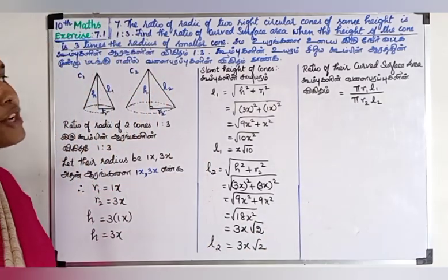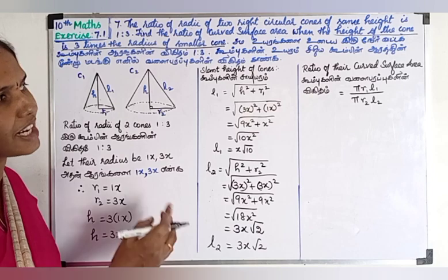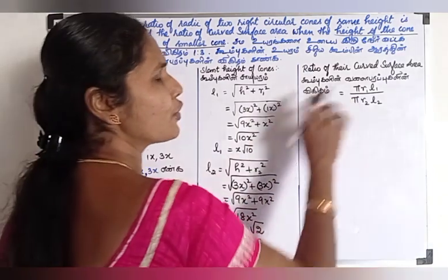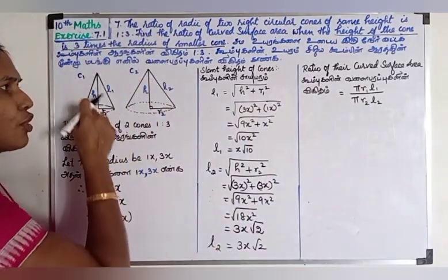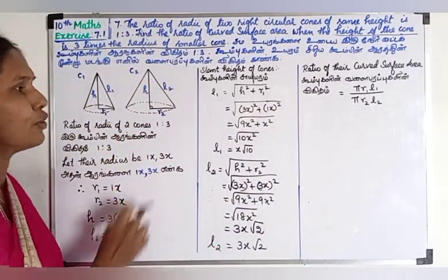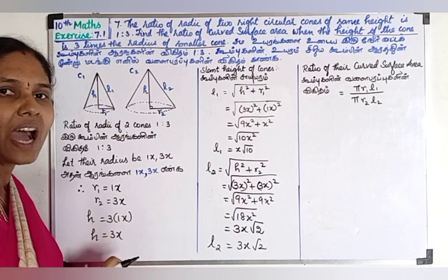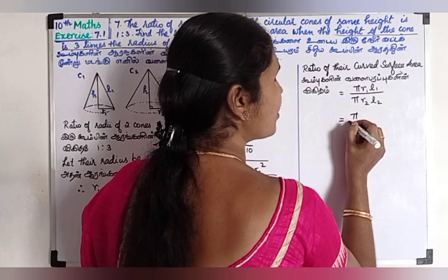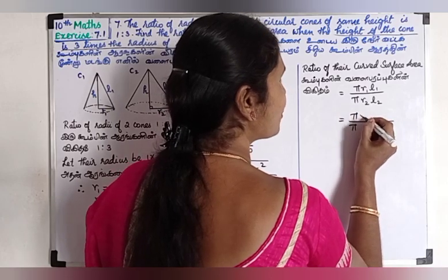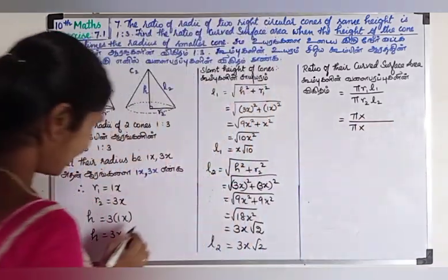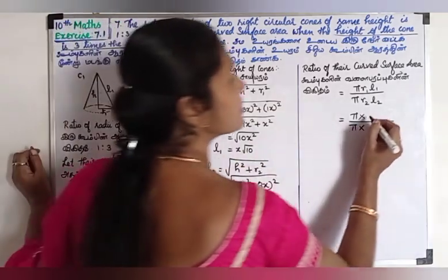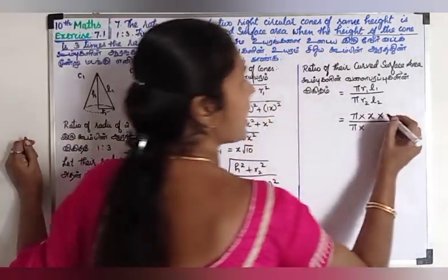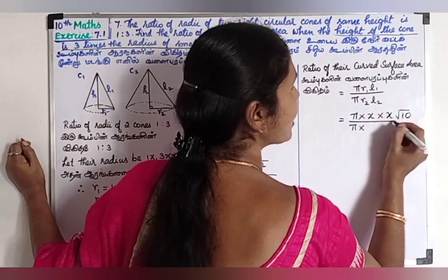Now we find the ratio of their curved surface areas. The curved surface area formula is πrl. So CSA1 : CSA2 = πr1L1 : πr2L2. Pi cancels out. So we get r1 × L1 : r2 × L2, which is x × x√10 : 3x × 3x√2. Simplifying this ratio gives us the final answer.